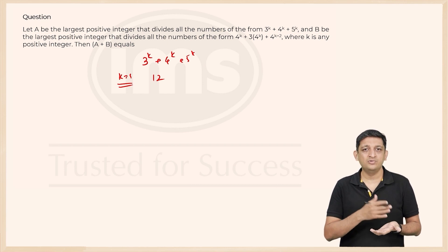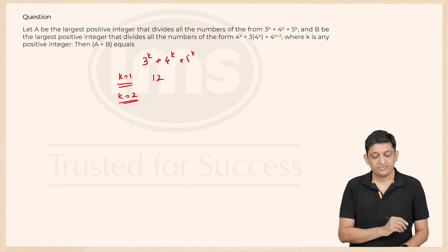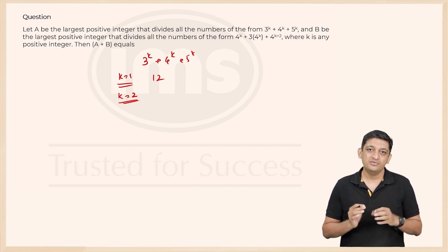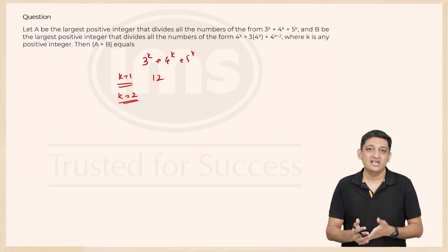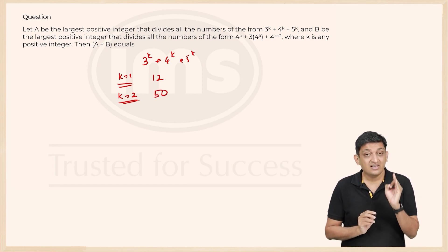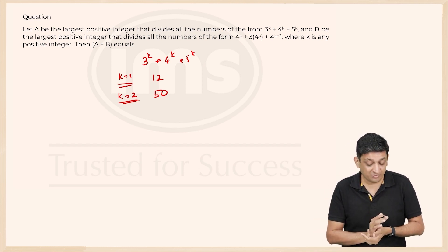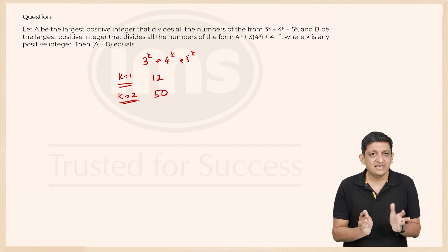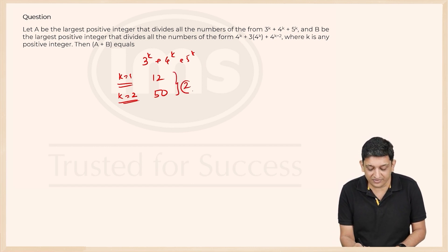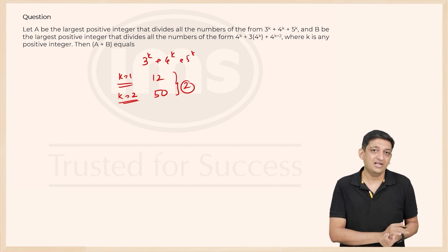What numbers divide 12? You have 1, 2, 3, 4, 6, 12 — six numbers that divide 12, but that's not the answer we are looking for. What if k equals 2? 3 squared plus 4 squared plus 5 squared. If you know your Pythagorean triplets, you know that 3 squared plus 4 squared is already 5 squared, which is 25. So 5 squared plus 5 squared gives you 25 plus 25, or 50. Now I need a number A that divides both 12 and 50, and it should be the largest possible positive integer. The HCF of 12 and 50 is 2, because they do not share any other factor — 1 and 2 are the only two factors shared by 12 and 50.